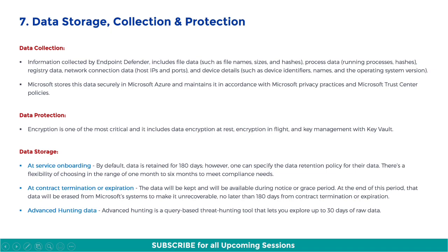Now let's understand the data storage, collection, and protection details of Endpoint Defender. Information collected by Endpoint Defender includes file data such as file names, sizes, and hashes; process data such as running processes and hashes; registry data; network connection data such as host IP and ports; and device details such as device identifiers, names, and the operating system version.